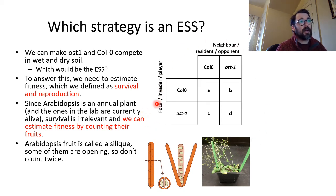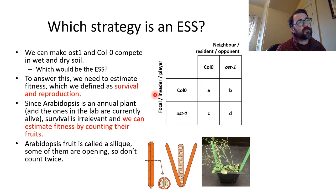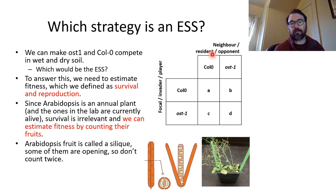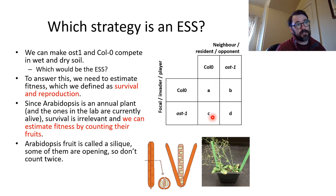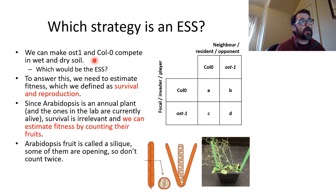I've been calling them the player and the opponent. People also call them the focal individual and the neighbor, or the invader and the resident. What we can do is have Columbia versus Columbia, Columbia versus OST, OST versus Columbia, and OST versus itself — and we can do this in wet and dry soil and ask which would be the ESS.